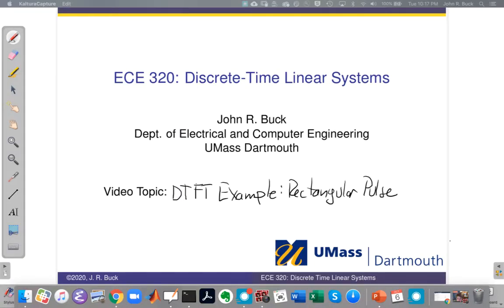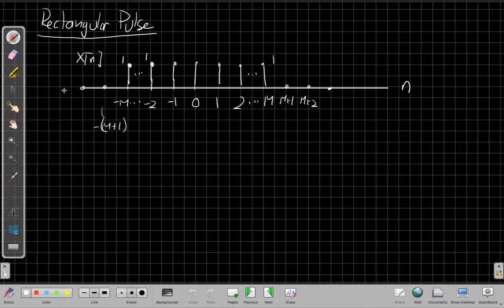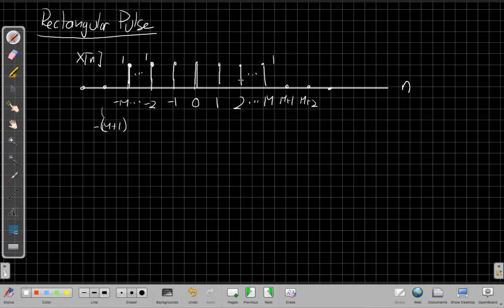So if I switch over to the whiteboard, our topic for tonight is an example of the discrete-time Fourier transform, which we often abbreviate the DTFT, for a rectangular pulse. And so the signal we're looking at is the signal that's zero in negative time until minus M, it jumps up to be 1 here at time minus M, and it continues being 1 the whole way up until some time plus M.